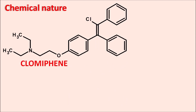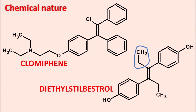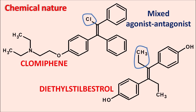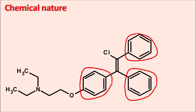The structure of clomiphene is somewhat similar to diethylstilbestrol (DES), which is an estrogen agonist. Clomiphene is a structural relative of DES, with a small modification: instead of ethyl groups on both sides of the ethylene bridge, one side has a chlorine and the other has a phenyl group. This structural similarity gives clomiphene both estrogenic and anti-estrogenic activity, making it a mixed agonist-antagonist. Clomiphene is a triphenyl ethylene derivative.